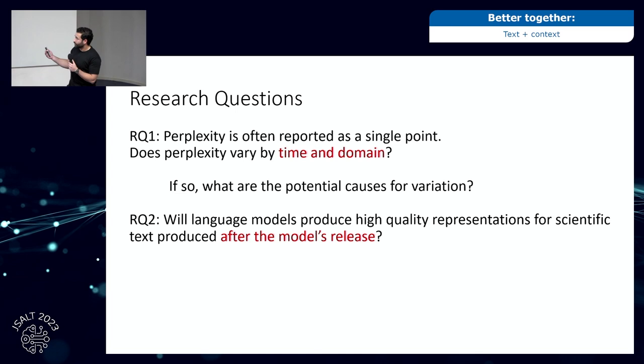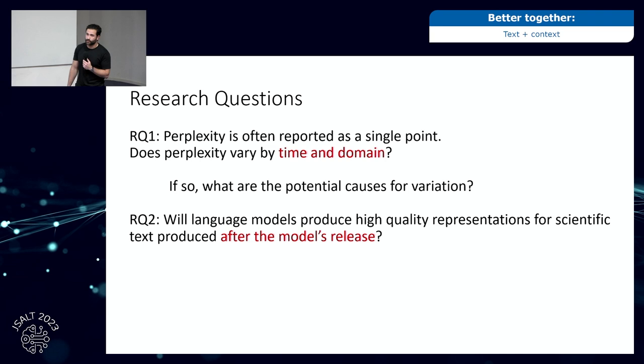Once we have perplexity, we can use it to evaluate how well the model represents papers from different time periods and different sources. We can find specific areas where the model can be improved, and we can make predictions — for example, how robust is this model going to be to text written after its training date? How variable is our scientific language over time? Our research questions: does perplexity in this domain vary by time and domain, and if so, what are the potential causes? Will language models produce high-quality representations for scientific text produced after the model's release?